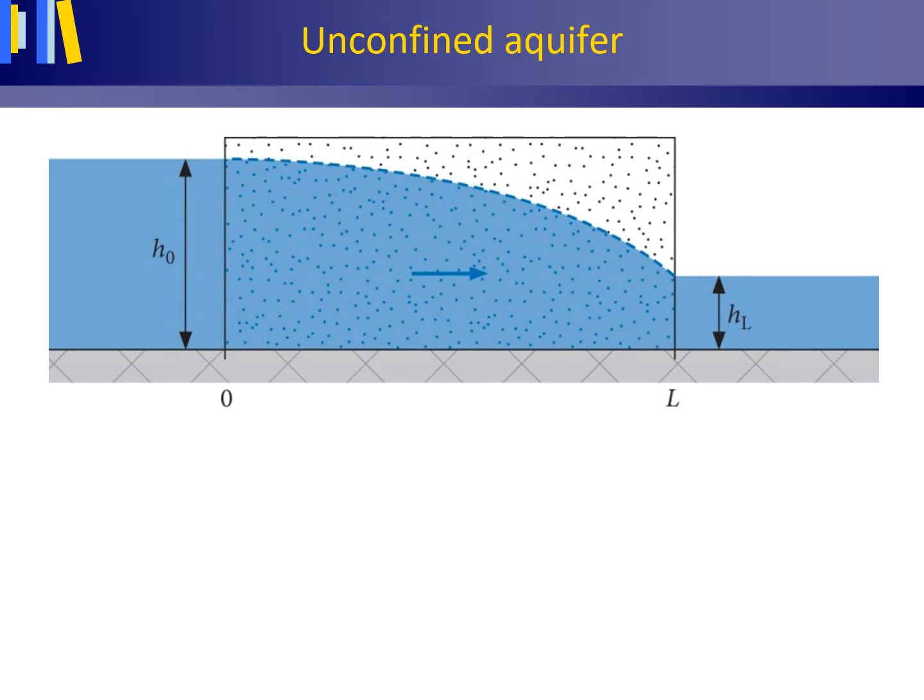Steady, unconfined groundwater flow between two fully penetrating canals as shown here. The aquifer is regarded as homogeneous and isotropic. Let's see what we can already figure out simply by reasoning.